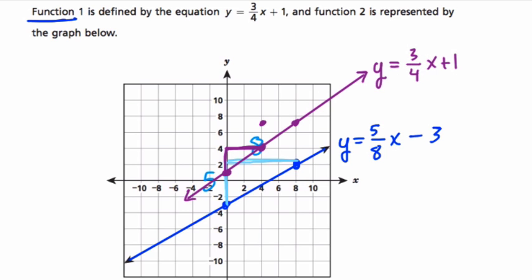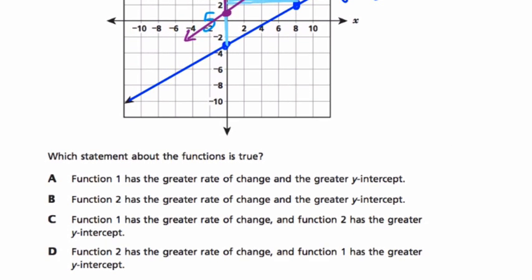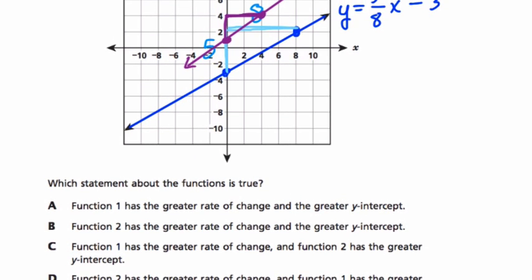Okay, let's see what the question is. Which statement about the functions is true? Let's read them. Function one has the greater rate of change and the greater y-intercept. Boom, there it is. It says true, right? The intercept's one, and the slope is three-fourths, which is greater than five-eighths. And all the other ones don't pan out. You can check them out. But there is the answer.